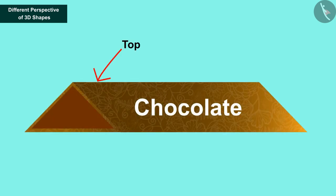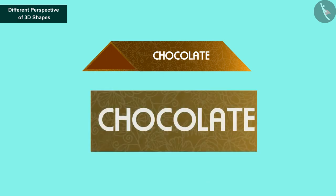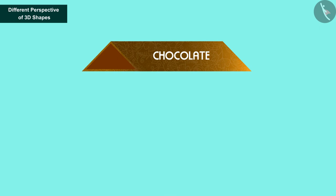Identify the top view of the given solid, the front view, and the side view. As you can see, the front view is a rectangle.